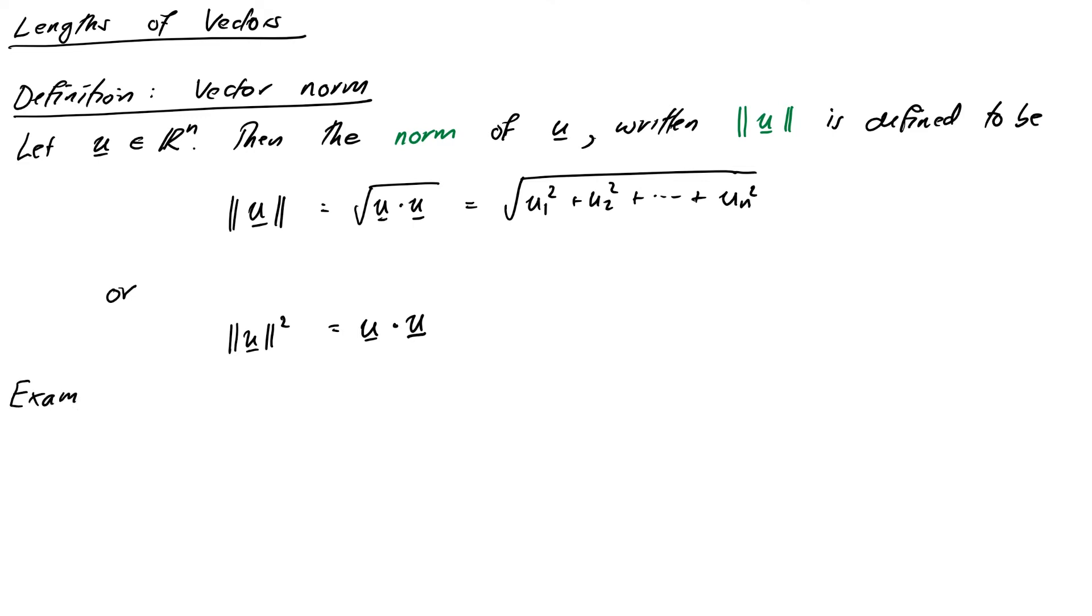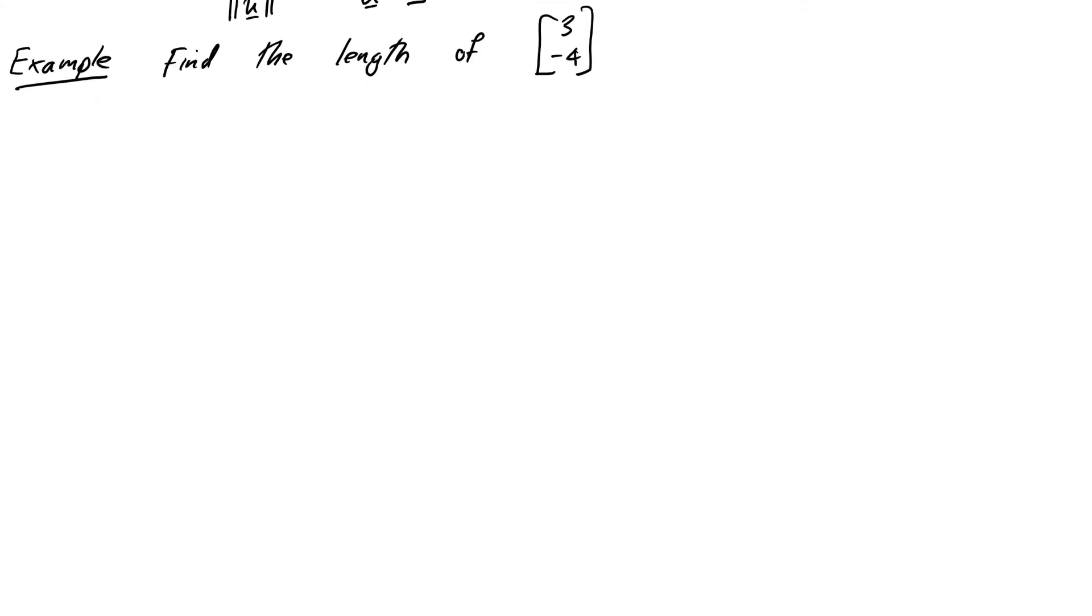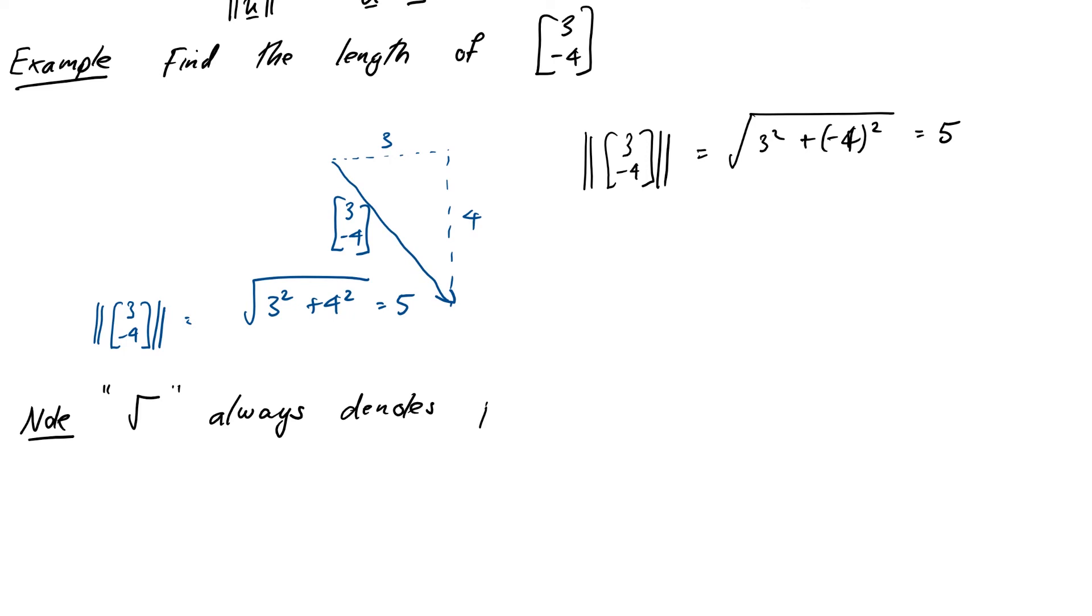So let's use it to find the length of the vector (3, -4). If we draw our vector on paper, we can see that its length ought to be 5, by Pythagoras' theorem. Okay, so 5 is the square root of 3² + 4², it's a 3-4-5 triangle. And this is exactly what our formula gives. We get the norm of the vector (3, -4) is just the square root of 3² + (-4)², which is the square root of 9 + 16, which is the square root of 25, which is 5. Notice that the square root symbol always denotes the positive square root of something. So this means that the length of a vector is always positive, or 0 I suppose, when all the entries are 0. We can write that last statement mathematically as ||u|| ≥ 0, and ||u|| = 0 if and only if u = 0.